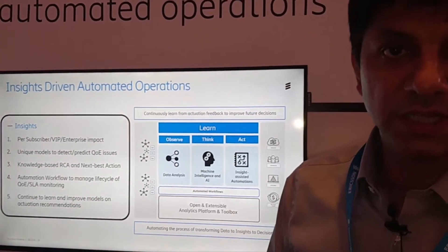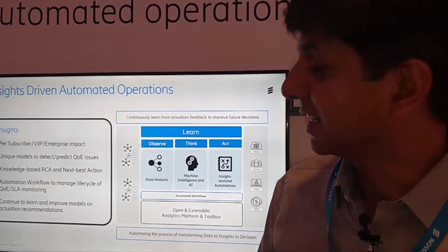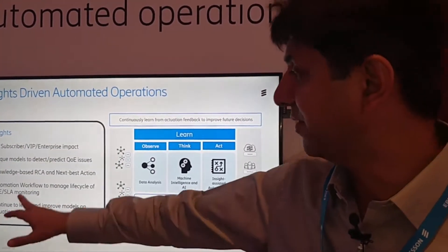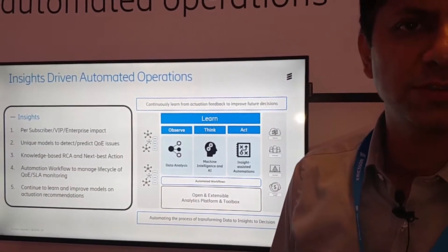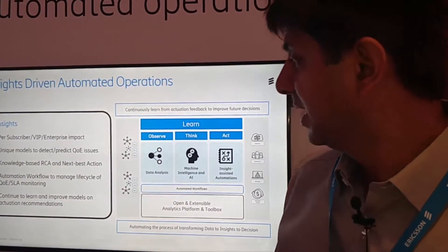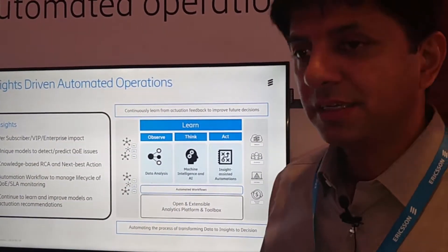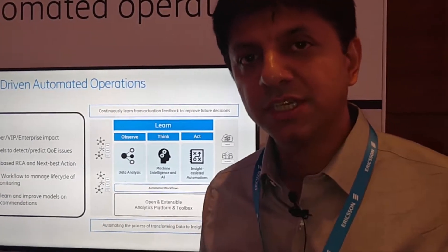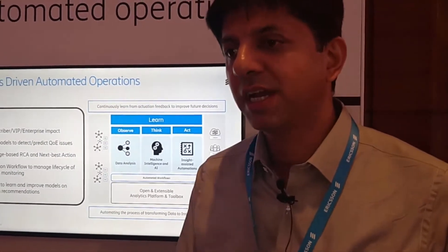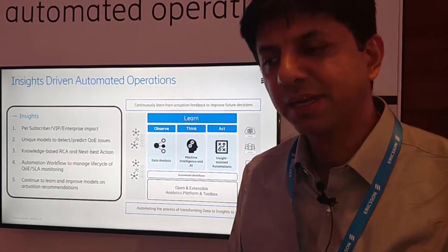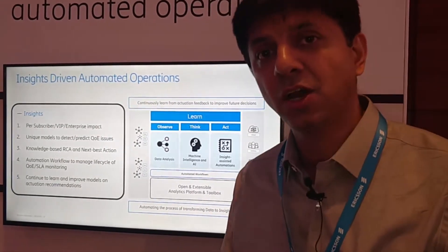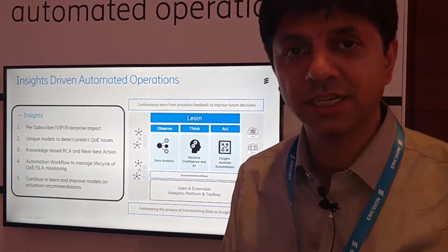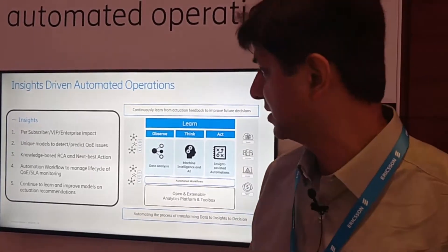Further, it has to have the flexibility and capability to support automation workflows to manage the lifecycle of all quality of service and service level monitoring. Lastly, any kind of machine learning or AI system should have continuous feedback from the actions it has taken and how the results have been — this is called reinforcement.